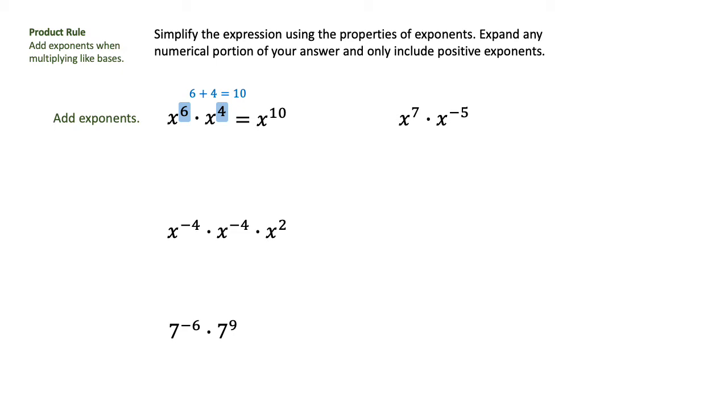Same thing in the second example. We do have x's as our like bases again, and we're going to just add those exponents. 7 plus negative 5 is positive 2, and that is x raised to the second power as the answer there.